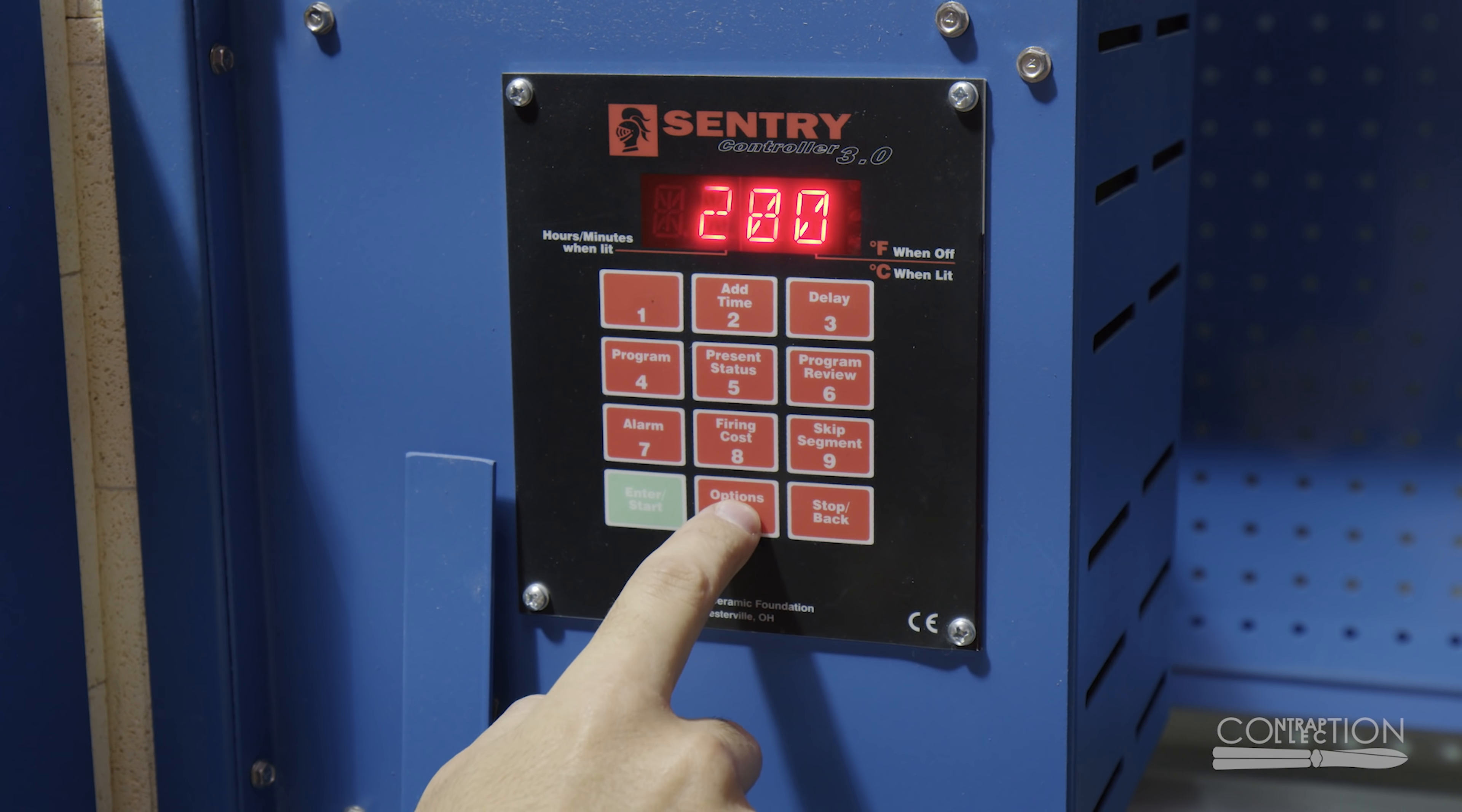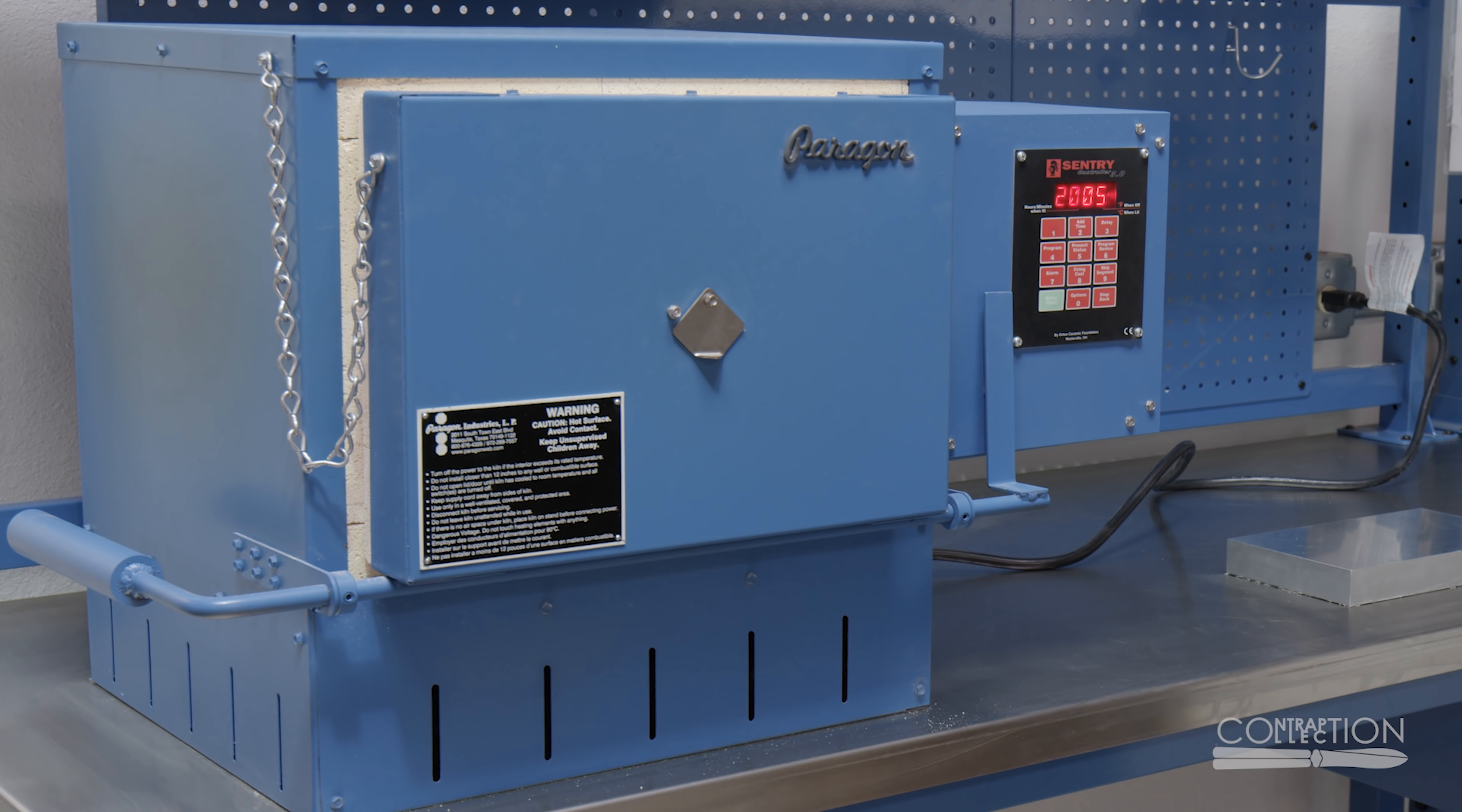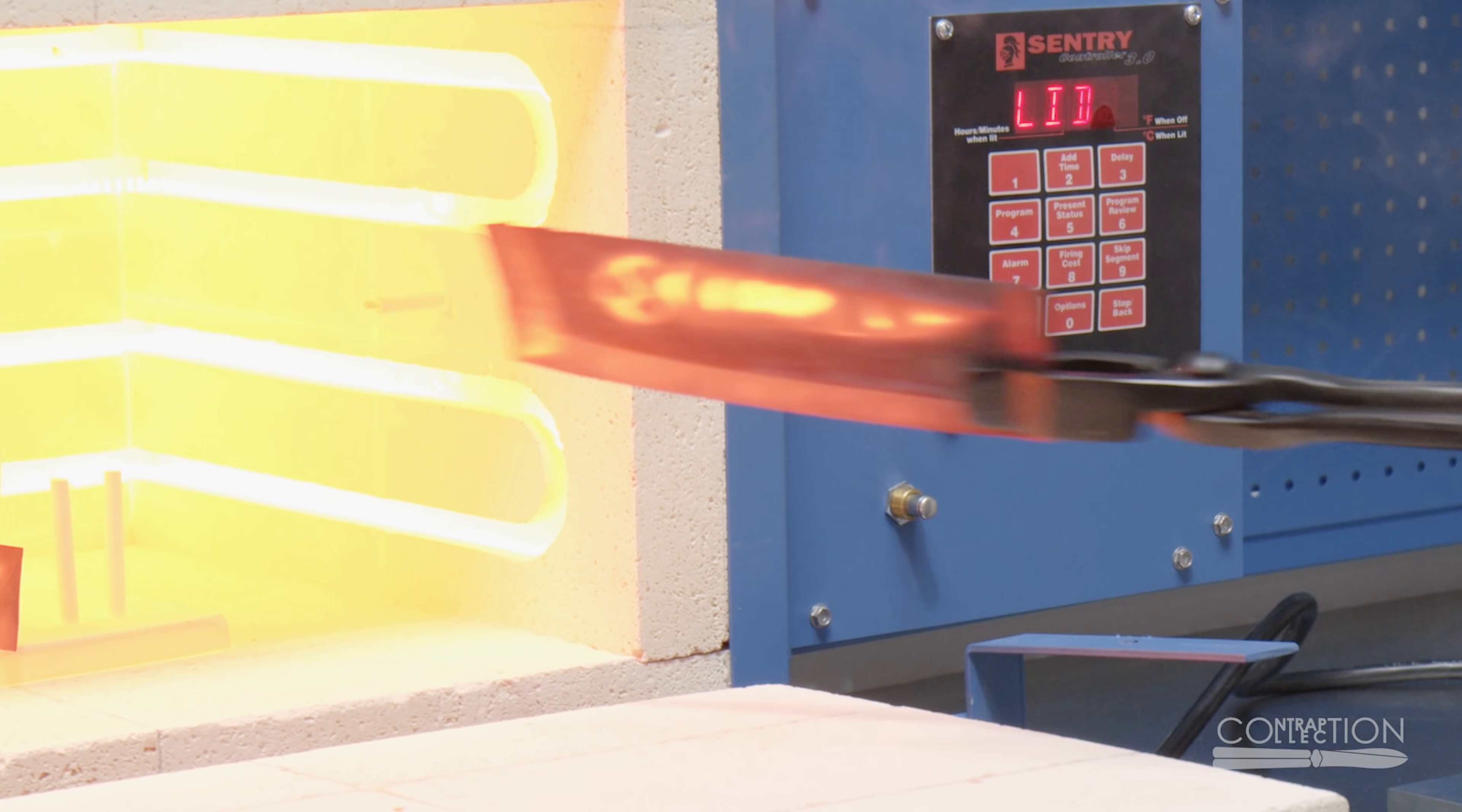I then heat up to 2000 degrees. Then I hold for 30 minutes. I was a bit nervous, so I got an extra hand from my brother. This is air hardening steel.